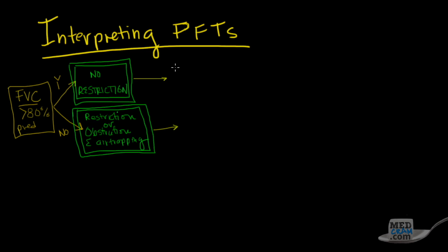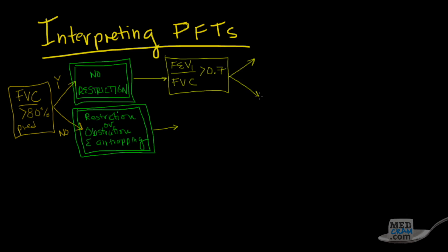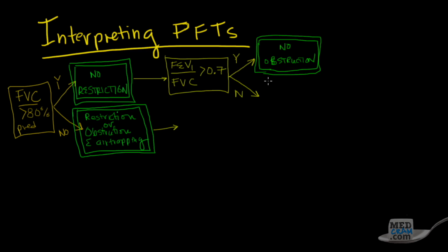You're going to ask: is the FEV1 divided by the FVC greater than 0.7? If the answer is yes, there is no obstruction. By definition, if the FEV1 divided by the FVC is greater than 0.7, there is no obstruction. If it's less than that, then you have obstruction.